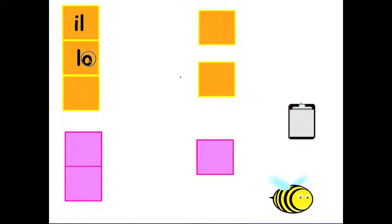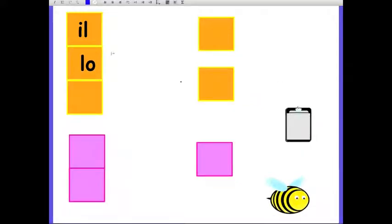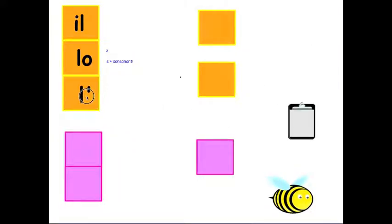LO, which you will use for words that are followed by words that start with Z or S plus consonant. Or you have L apostrophe for masculine words that start with a vowel.